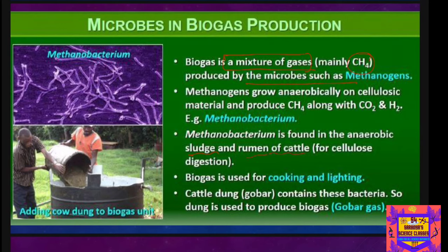Methanobacterium is commonly found in anaerobic sludge and in the rumen of cattle, where it helps with cellulosic digestion. These bacteria digest the cellulosic material present in the food of cattle and play a very important role in their nutrition. They are excreted along with the cattle dung — commonly known as gobar — which is rich in methanogenic bacteria, and this dung can be utilized for generation of biogas, which is why it is commonly called gobar gas.